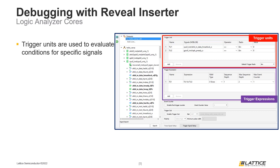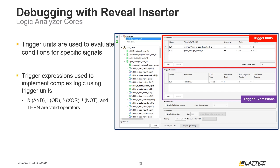Trigger expressions implement more complex logic for signal analysis and can reference trigger units as constants using their names. As shown in the example on the slide, trigger expression TE1 will be true when trigger units TU1 and TU2 are both true. If a trigger expression is true, the trace signals will be captured and can be used for signal analysis.